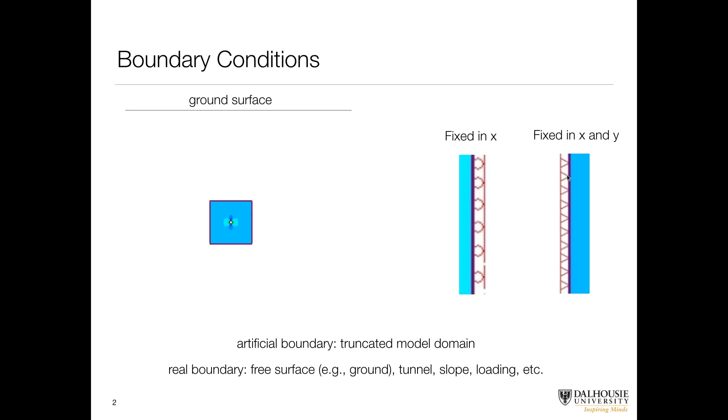Another type of boundary condition we refer to as a pin, and it is represented by these triangular elements. And each node is essentially fixed in X and Y. It cannot move in any direction. So it's completely held rigidly in the model boundary.